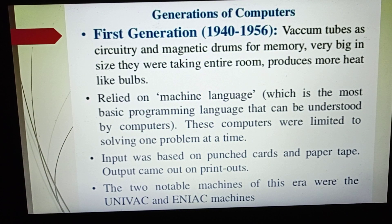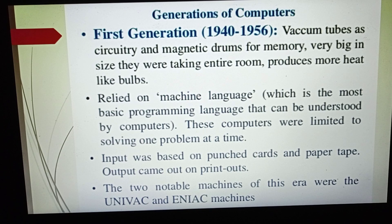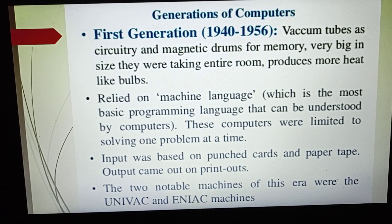The first generation computers were from the era of 1942 to 1956. These were developed using vacuum tubes as circuitry and magnetic drums for memory. Because of using these vacuum tubes, they were big in size and occupied an entire room of about 1800 square feet and consumed 180 kilowatts of power.